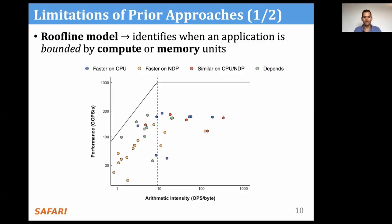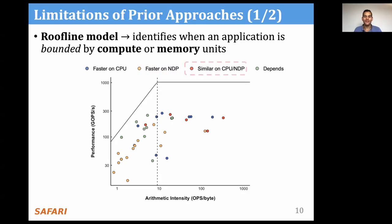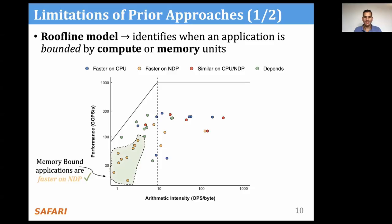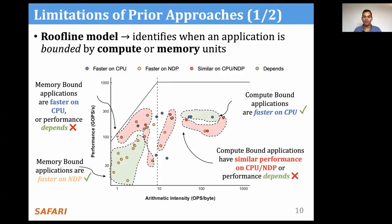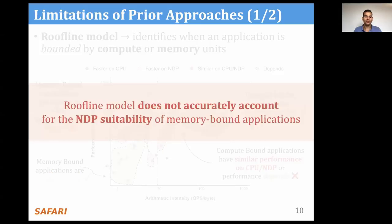We evaluate this model with more than 40 applications in order to identify when they benefit from NDP offloading or not, classifying applications into four categories: faster on CPU, faster on NDP, similar performance, or performance-dependent on configuration. We observe that memory-bound applications are faster on NDP as expected, and some compute-bound applications run faster on the CPU as expected. However, we see that some memory-bound applications are faster on the CPU or performance-dependent, and similar observations hold for some compute-bound applications. Therefore, we conclude that the roofline model does not accurately account for the NDP suitability of memory-bound applications.